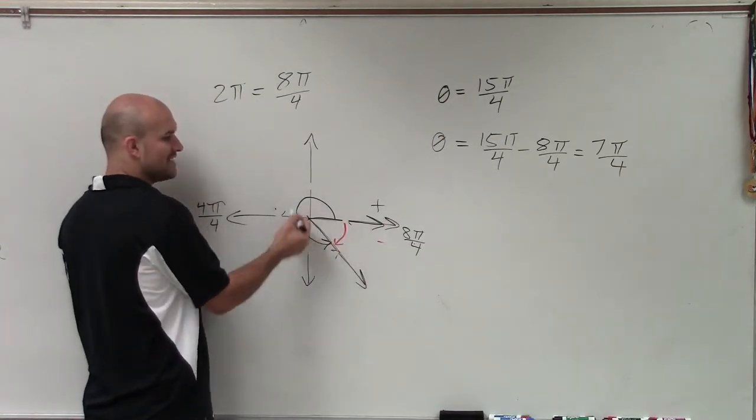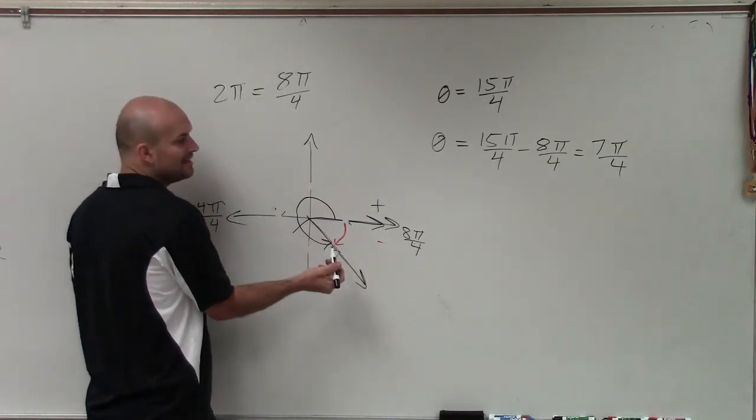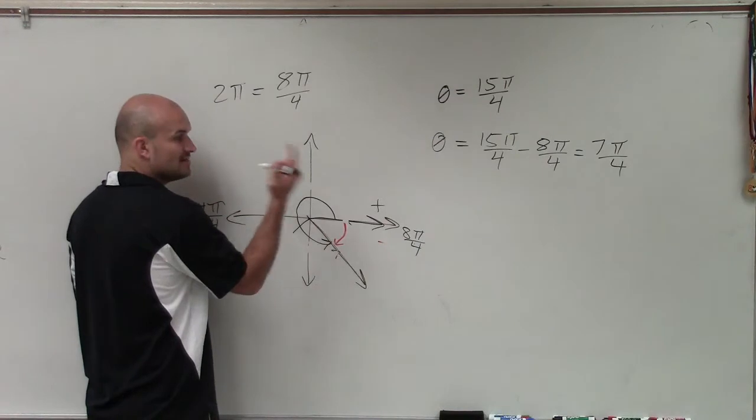Well, remember, what I have here is 7 pi over 4, right? And really, this last distance is just going to be pi over 4, right? The distance of this 7 pi over 4 to get to here is just going to be pi over 4.